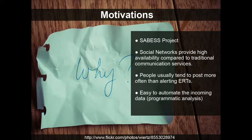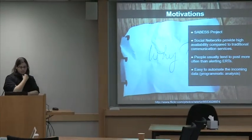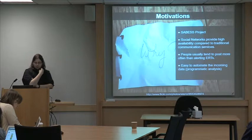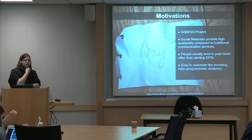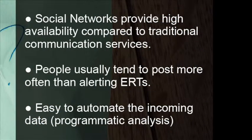Why social networks? Because social networks provide high availability compared with traditional communication services. For example, during an earthquake, phone lines may be broken or damaged and repairs usually take several days. Instead, social networks are rarely inaccessible and provide a new way for alerts. Additionally, people tend to post more often than alerting authorities — if they observe smoke, they probably decide not to alert authorities but just post about it on Twitter. Programmatic analysis also allows us to automate incoming data without the need for high human resources.